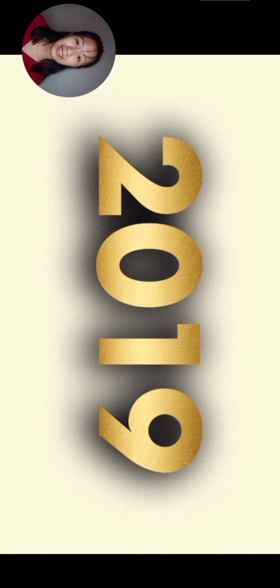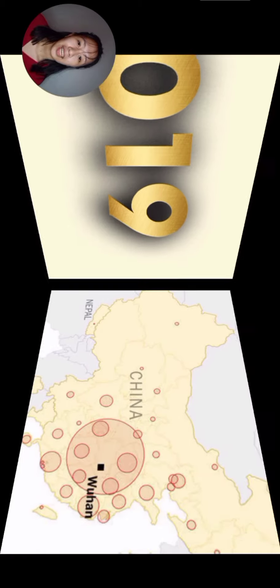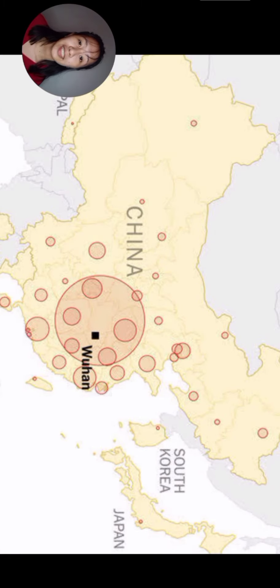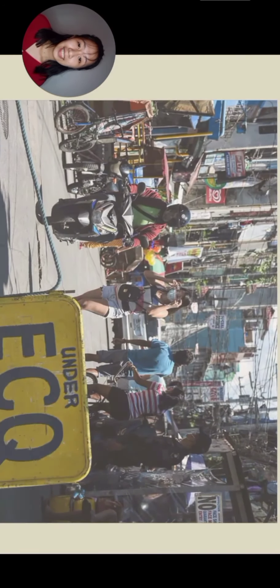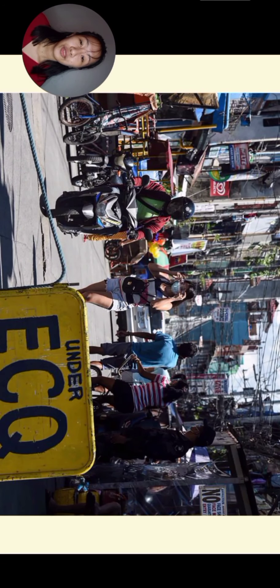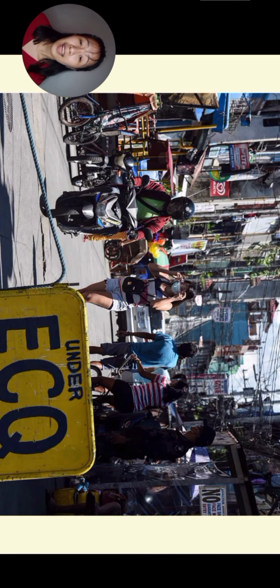Going back to the year 2019, coronavirus started. It was started in Wuhan, China. On the year 2020, lockdown was implemented on the last month of the last quarter of school year 2019 and 2020.